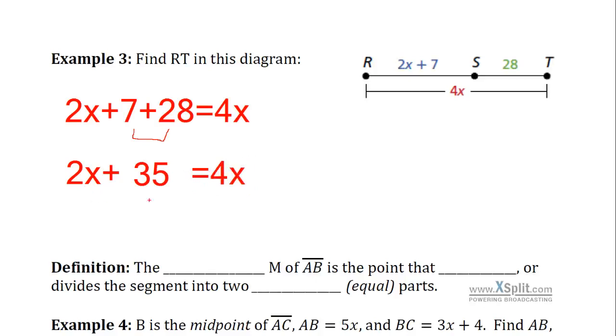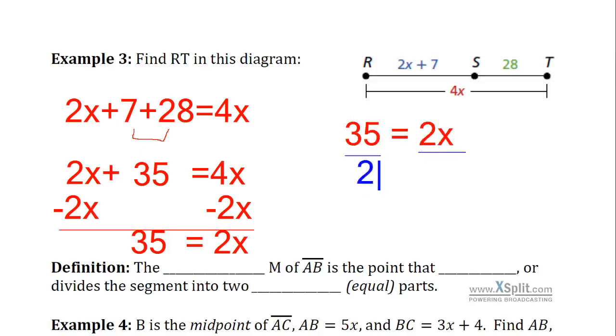Now I'm going to go ahead and subtract the 2X from both sides so as to simplify this equation a little farther. This will simplify down to give us something like 35 is equal to 2X. And if you remember from algebra, if you're given something like 35 is equal to 2X, we need to get X by itself. We're going to go ahead and divide both sides by 2. So we're going to get an X equals 17.5.